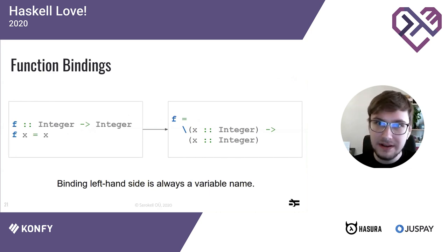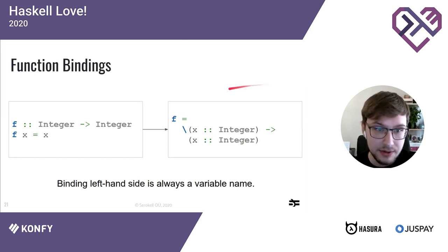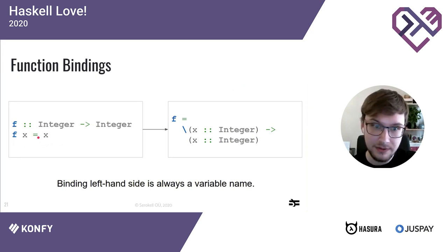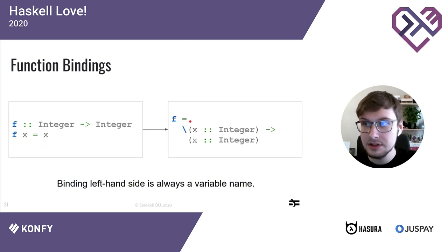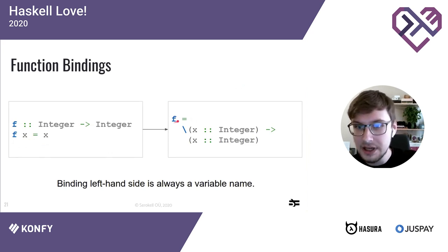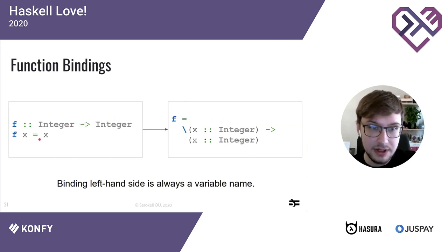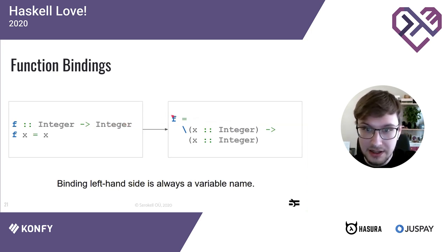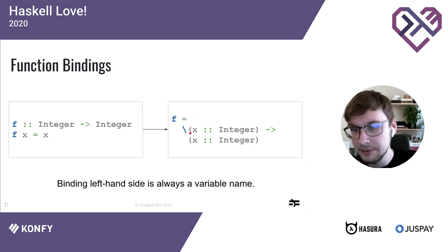Bindings in Core always have a single variable name on the left-hand side. A function binding is desugared into a lambda. In the source program the left-hand side of a binding 'f x' contains both the function name and the argument, but in the Core program only a variable name appears to the left of the equality sign — we just say f equals this expression. There are also no separate type signatures; all type information is stored inline.